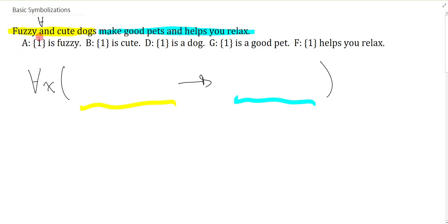What is the thing we're talking about? Dogs that are fuzzy and are cute. We have to include all three things in any order, and the easiest way is to use a conjunction between them. Now X isn't just anything, it's anything that is fuzzy and cute and a dog. The property is if you're one of these things then you are a good pet and they help you relax.